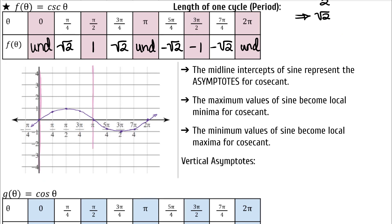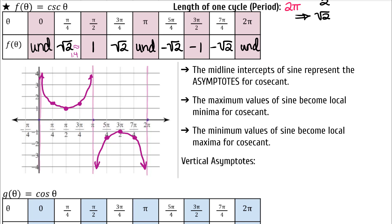The undefined values represent vertical asymptotes. One upward-facing U and one downward-facing U complete a cycle of cosecant, which means cosecant has the same period as sine: 2π. When we graph cosecant, we will graph the corresponding sine function and then sketch cosecant on top. Just remember, the sine function is not part of the cosecant function — this is the cosecant graph. We just graph sine to help us out.